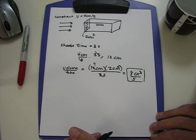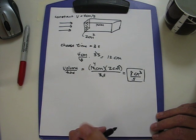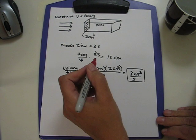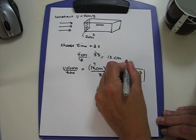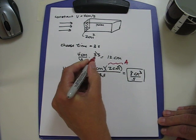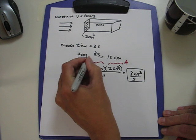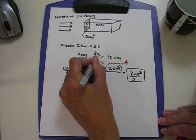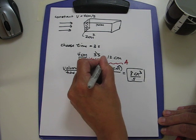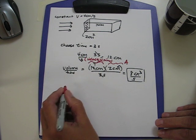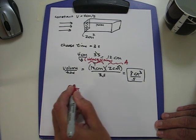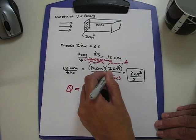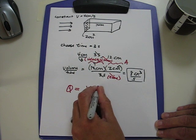Having done this example with numbers, we can now figure out what the overall general formula is. What we did was we took the cross-sectional area A and multiplied it by this height, which was the equivalent of velocity times time. So we get our general formula: the volumetric flow rate is velocity times cross-sectional area, with time canceling out.